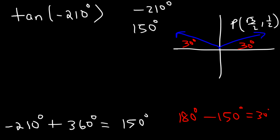Any time you need to find tangent, cotangent, secant, or cosecant of an angle that's either 0, 90, 180, or 270, these are angles that are not in any particular quadrant — they're on the x or y axis. Whenever you have one of those four functions, the answer is either 0 or undefined.